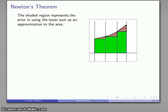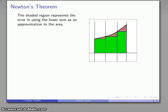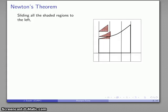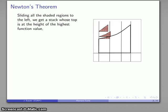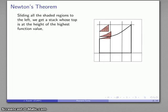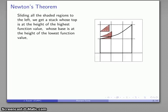Through the magic of advanced CGI animation, I'm going to slide all of those shaded pieces over and stack them. This shaded region corresponds to the error, so if I have some idea of how big it is, I have some idea of how accurate my lower sum is going to be. If I put those pieces into a box, the stack of error pieces reaches a high point equal to the highest function value over the region, a low point equal to the lowest function value, and a width equal to the maximum width of the subintervals.